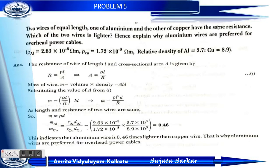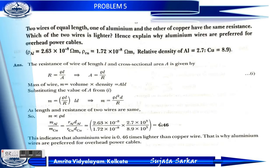Since the length and resistance of the two wires are the same, we can write: M_Al by M_Cu equals (rho_Al into D_Al) by (rho_Cu into D_Cu). Substituting values: (2.63 into 10 to the power minus 8 into 2.7 into 10 to the power 3) by (1.72 into 10 to the power minus 8 into 8.9 into 10 to the power 3), we get approximately 0.46.